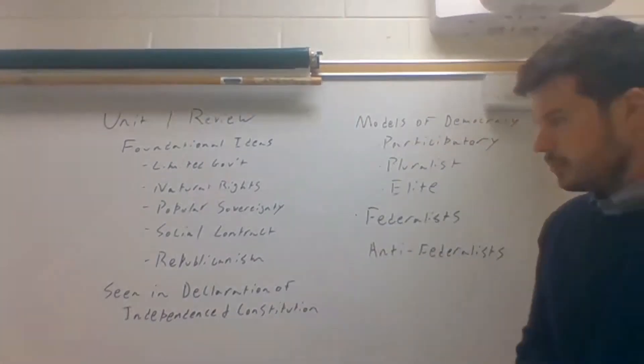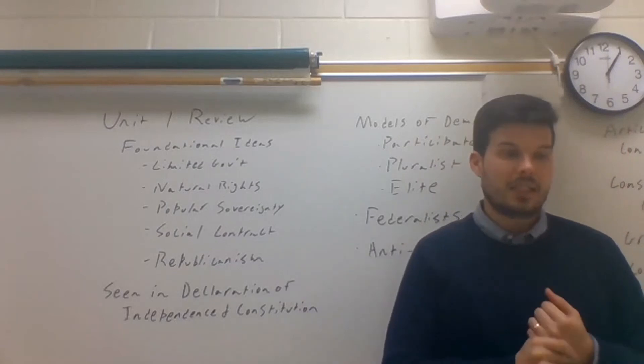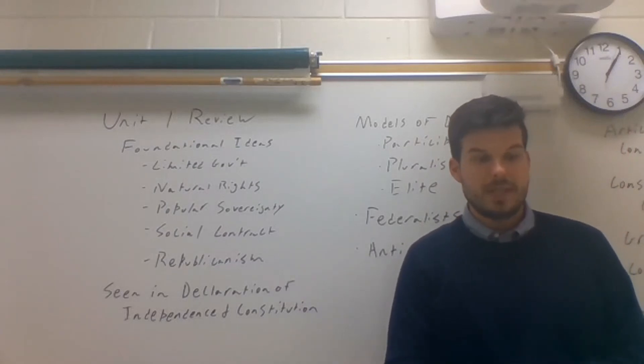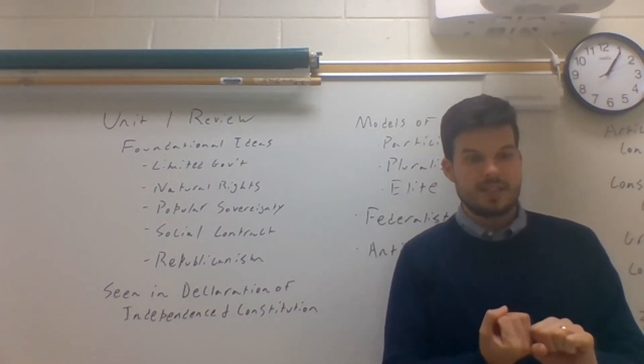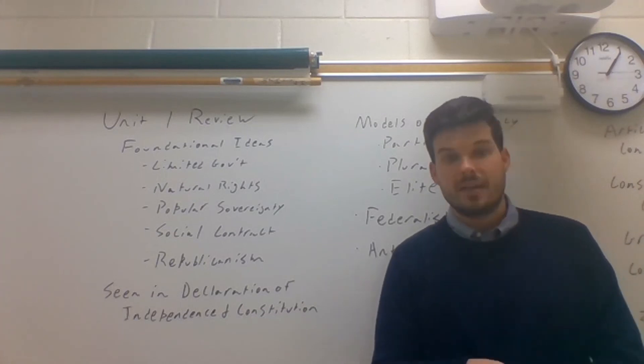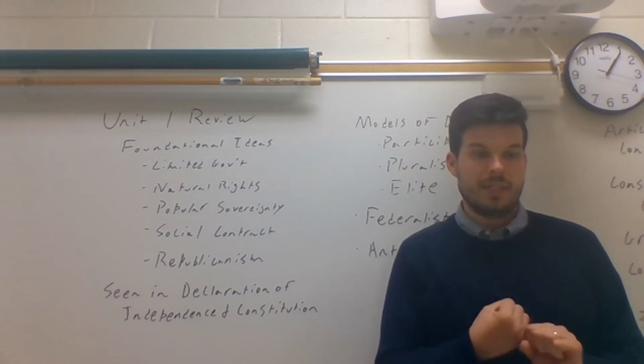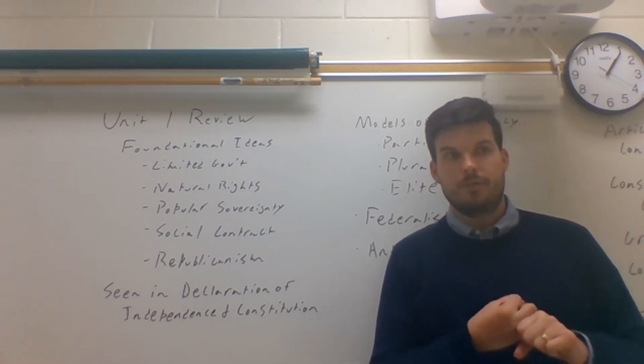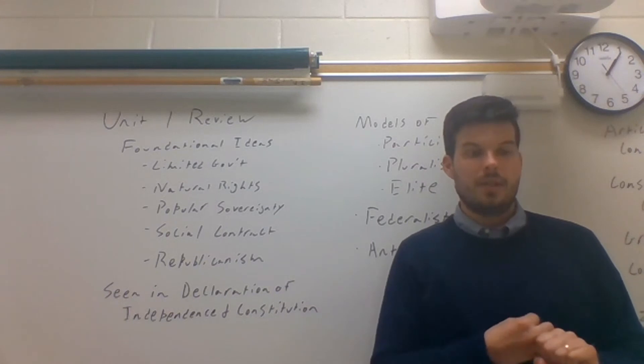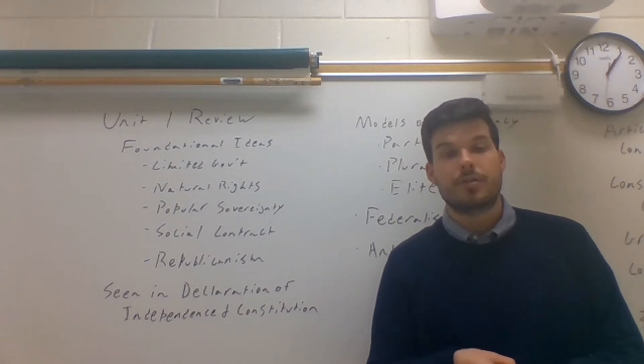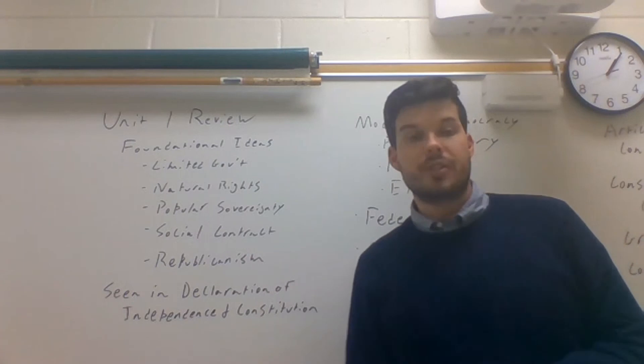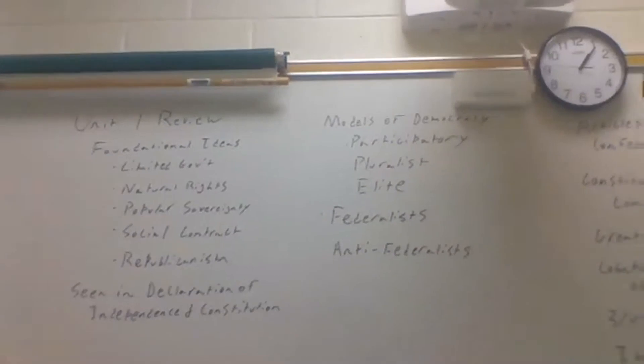And then this last idea of republicanism is not the republican party that we associate with in modern times. It is a republic that we choose people to do the work for us. We elect people to carry out policy decisions. That is a republic. So we live in a democratic republic. We elect the people to do the work for us. All of these ideas are seen in the Declaration of Independence and the Constitution. Really, from the very beginning, we see a ton of this in the Declaration of Independence. Popular sovereignty is the idea that it is the consent of the governed that gives government its power. Jefferson wrote of certain unalienable rights, life, liberty, happiness. That is the idea of natural rights. And even talking about the extent of the social contract, saying it is an inherent right that we can overthrow government.